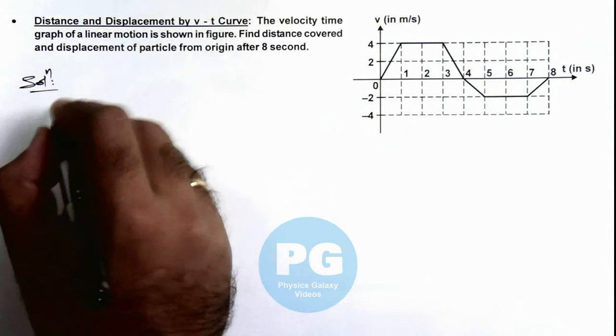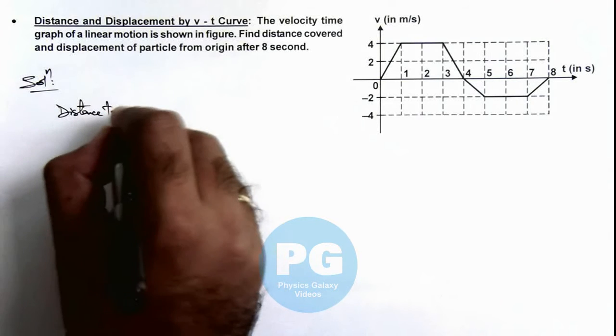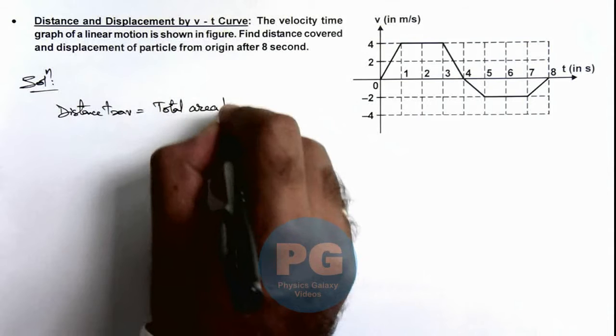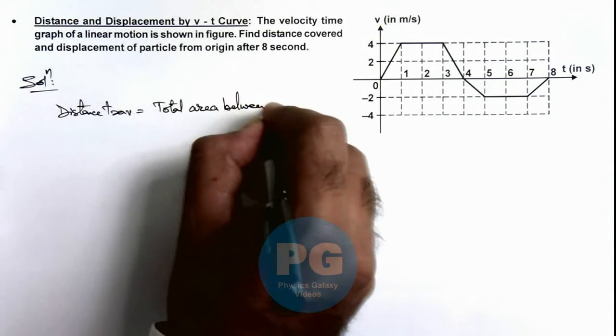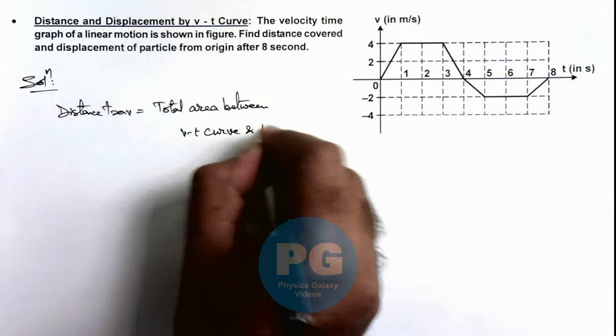So here we can write the distance travelled is equal to the total area between v-t curve and time axis.